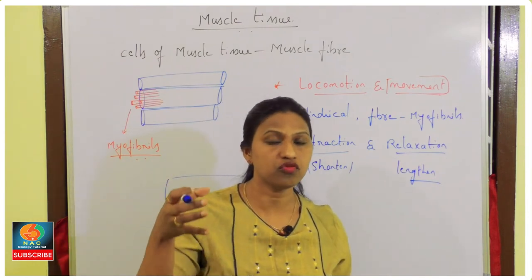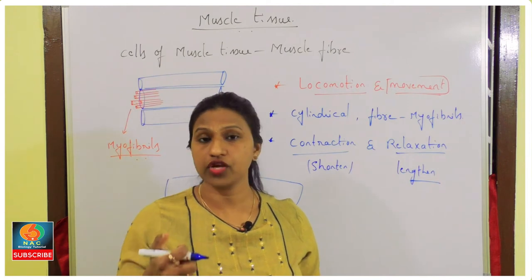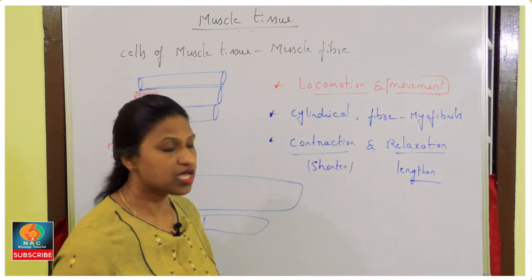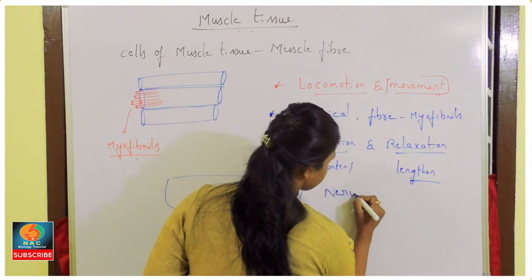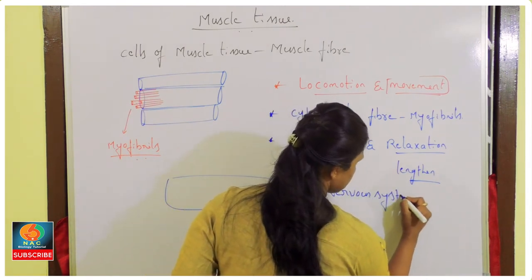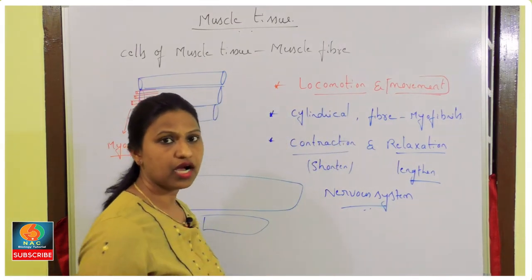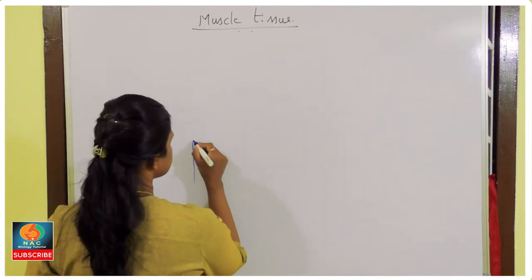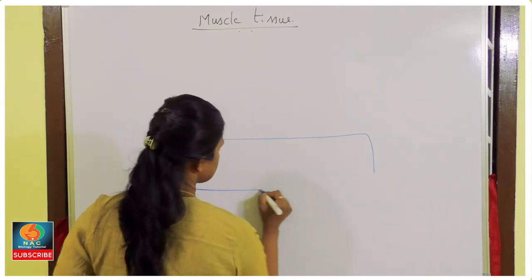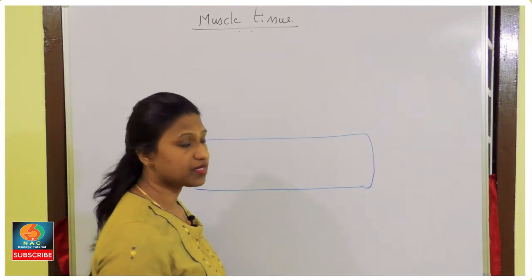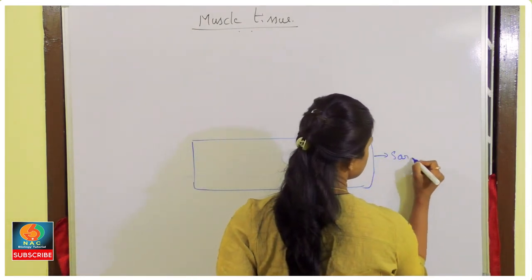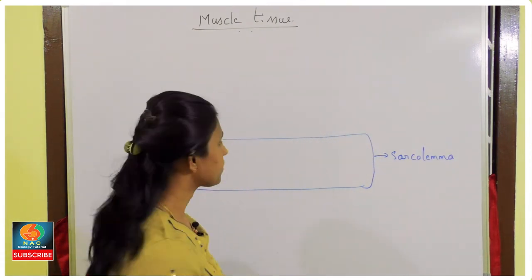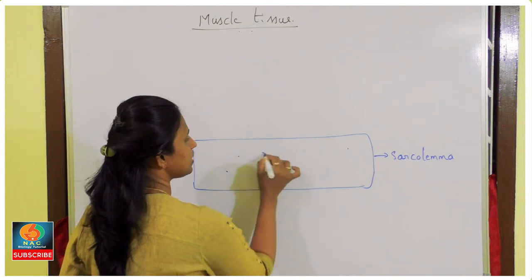The contraction and relaxation of muscles is controlled by the nervous system — just like a remote controls a TV. The membrane of the muscle cell is called the sarcolemma, just like a plasma membrane, and the cytoplasm inside is called the sarcoplasm.